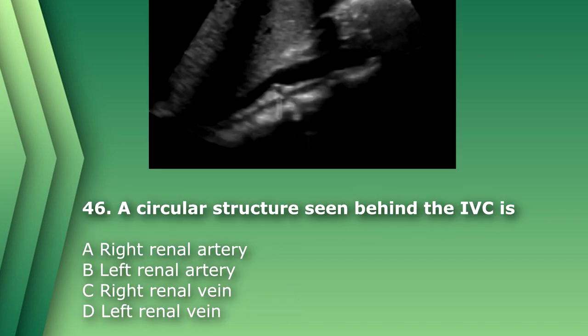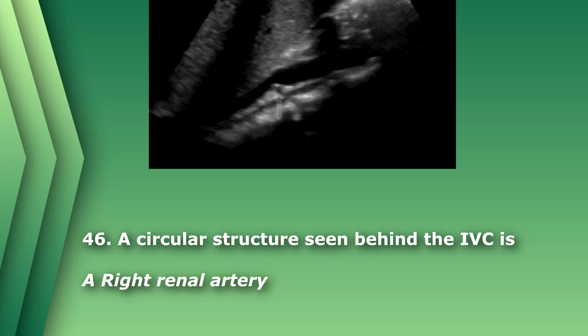Number 46. A circular structure seen behind the IVC is: A. Right renal artery. B. Left renal artery. C. Right renal vein. D. Left renal vein. The answer is A, right renal artery. The aorta is normally on the left side of the body. The right renal artery goes off of the right side of the aorta and travels posterior to the IVC to reach the kidney. And the left renal vein normally travels between the SMA and the aorta.